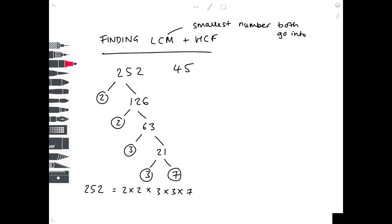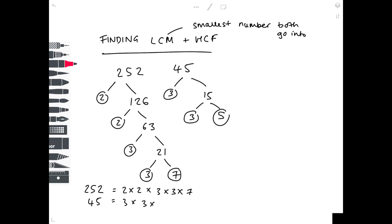Now let's do the same with 45. 45 is divisible by 3, which is a prime number, and 45 divided by 3 is 15. 15 is divisible by 3 to give 5, and 5 is a prime number, so we're done. Write out the circled numbers, and 45 is written as a product of prime factors: 3 × 3 × 5.